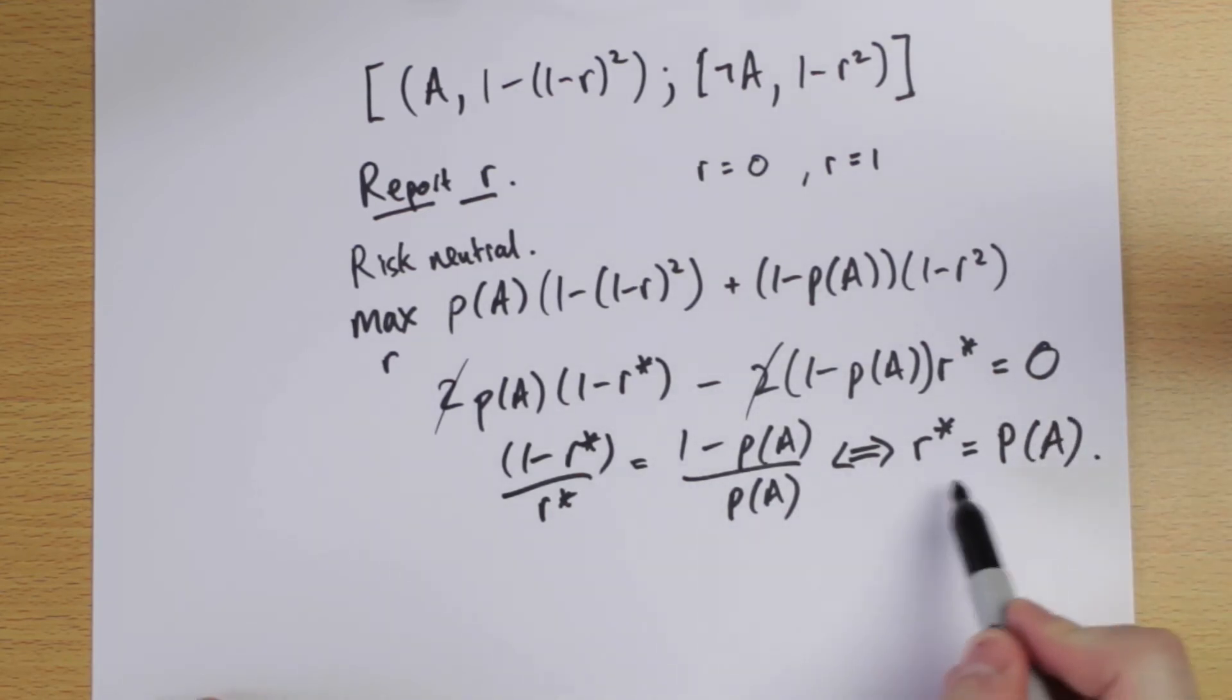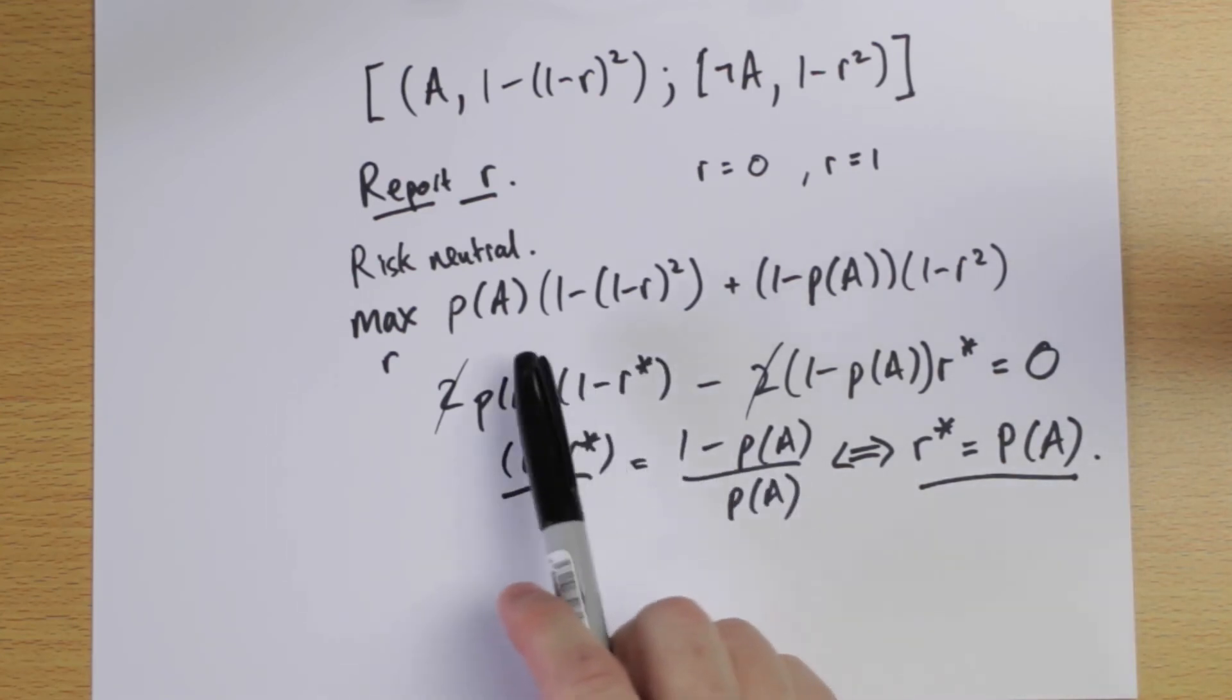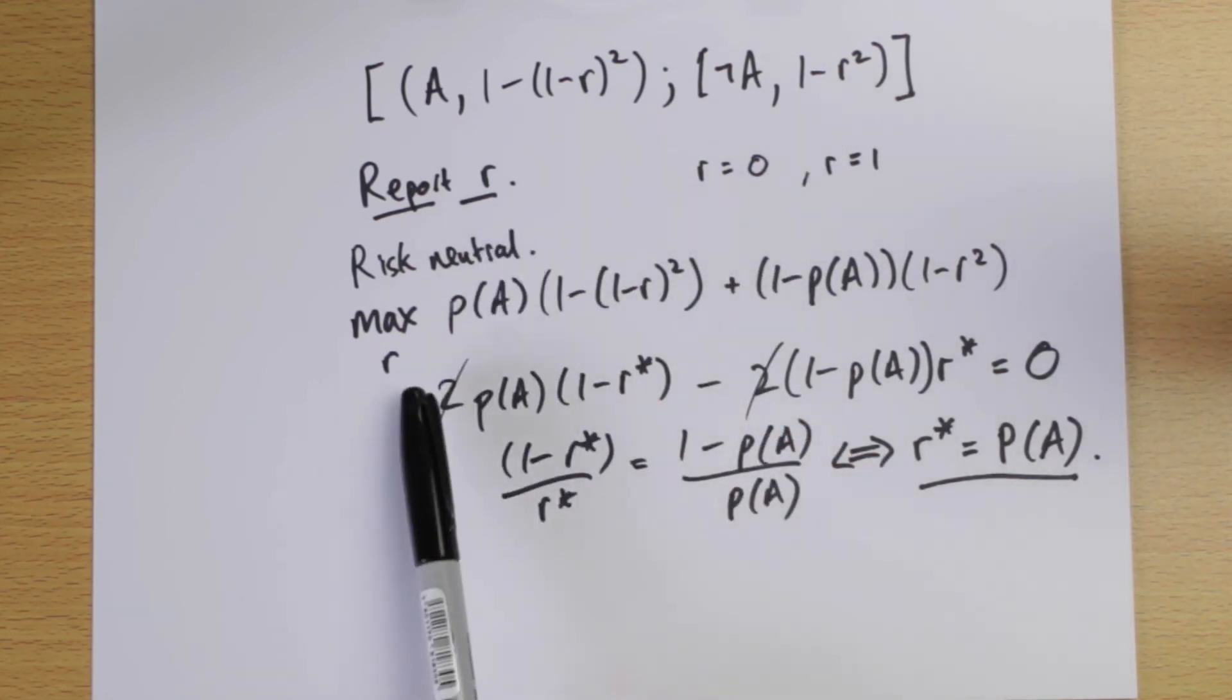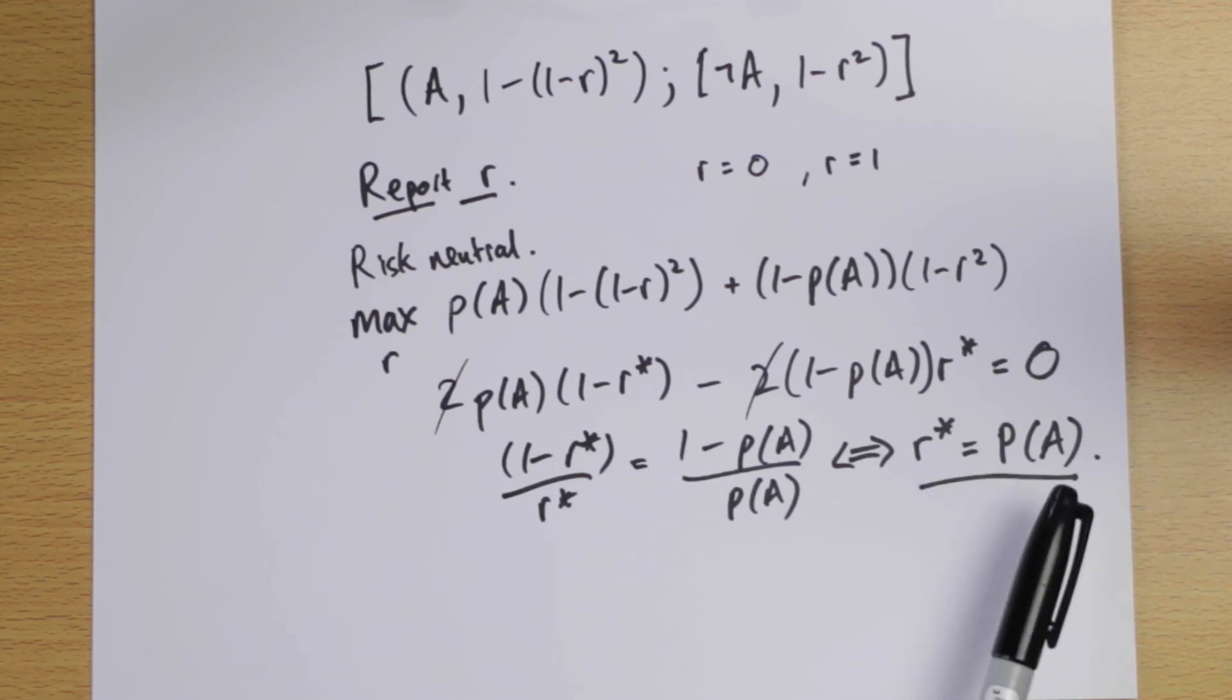Now, isn't that magic? So what we have here is an incentive compatible method for eliciting subjective probabilities, okay? So in particular, when the decision maker is risk neutral in this case, they will solve, they will look at this proper scoring rule, they're asked to report a number, and they want to choose their most preferred number, and simply by solving that problem, their optimal answer is simply to tell me what they think the probability of A actually is. So it's an incentive compatible method for eliciting subjective probabilities.